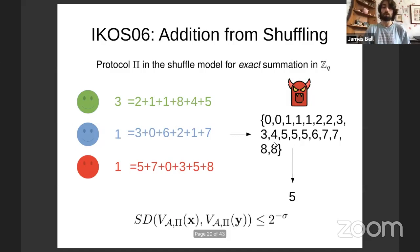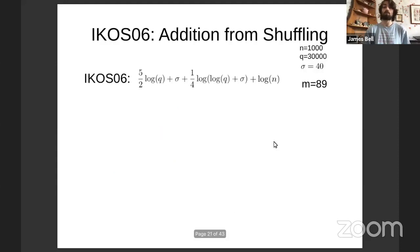Correctness of this protocol is clear to anyone who understands additive secret sharing. The difficult part is proving that this protocol is secure. We want to show that if you have two different datasets x and y that add up to the same amount, then the distribution of the adversary's view on each dataset is the same up to statistical distance of at most two to the minus sigma, where sigma is a security parameter.